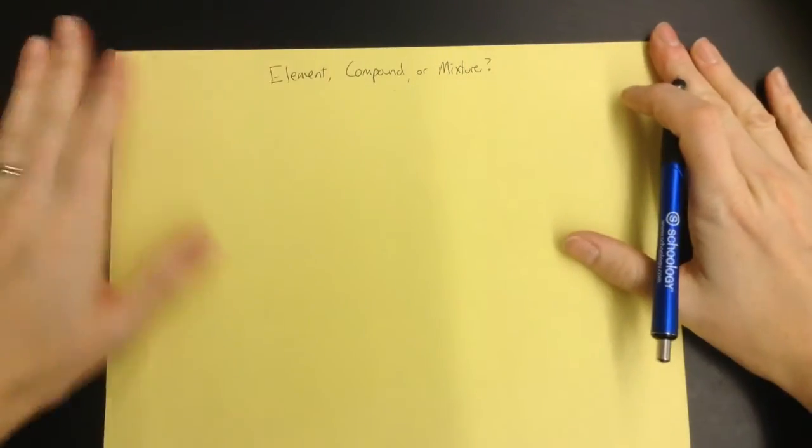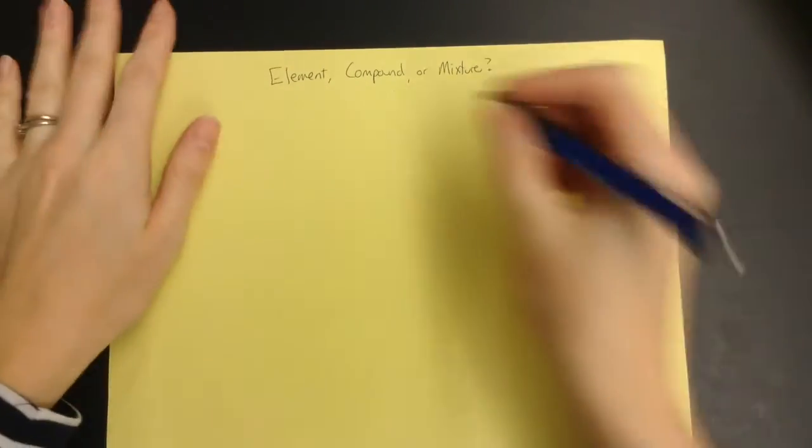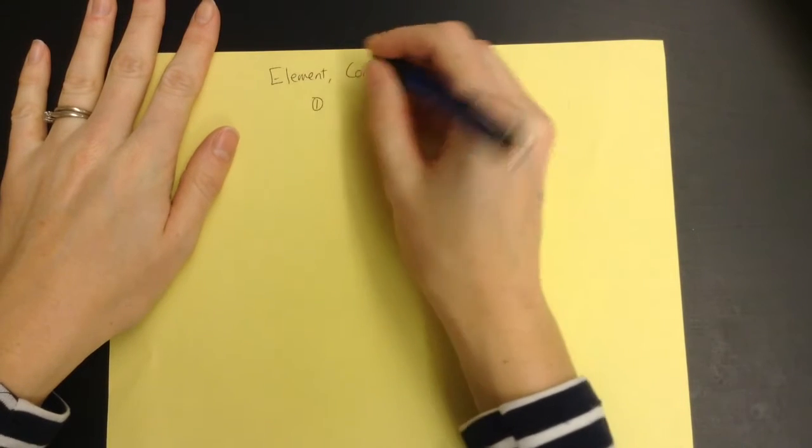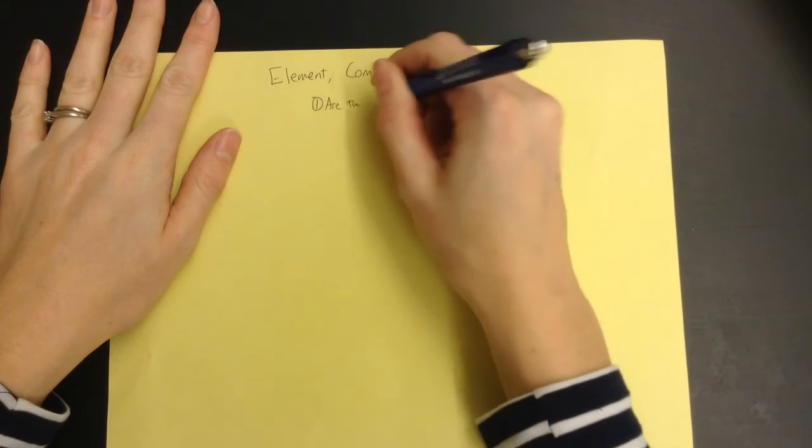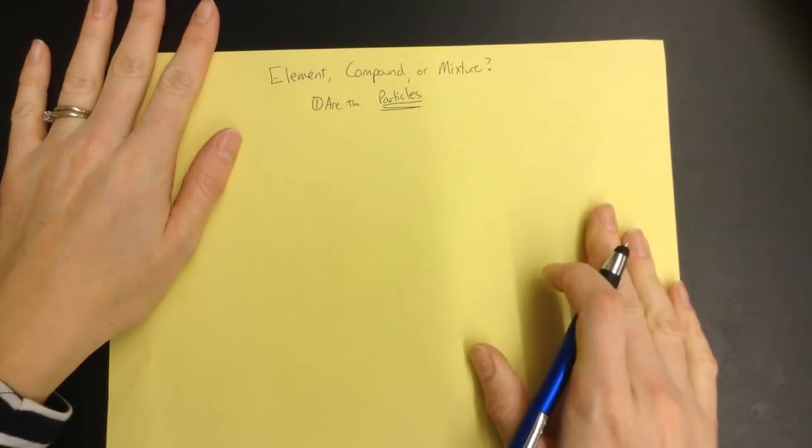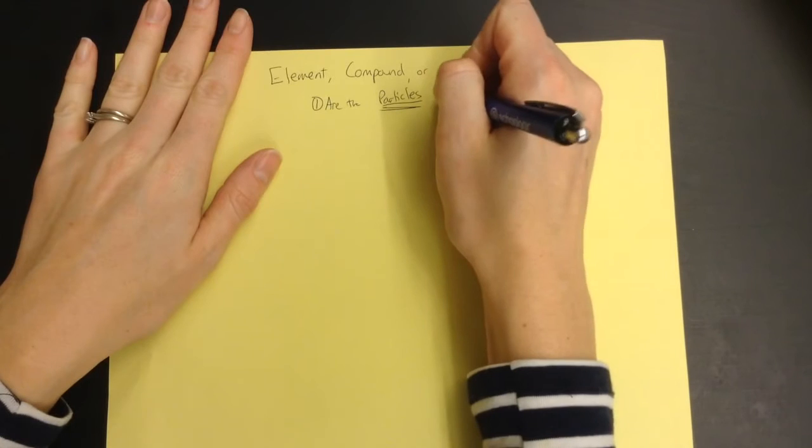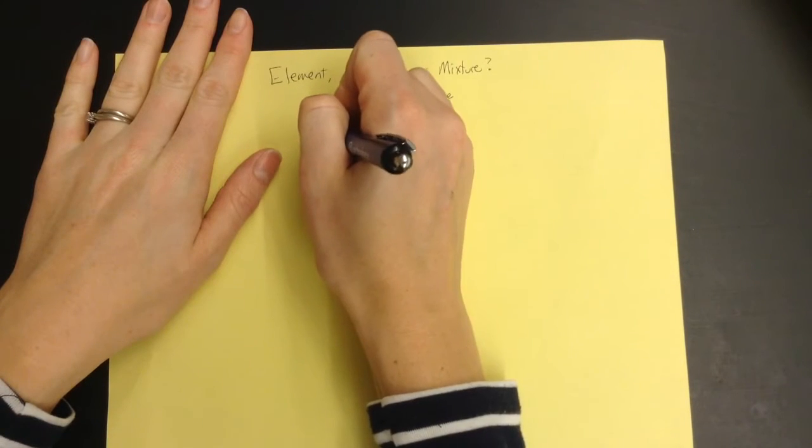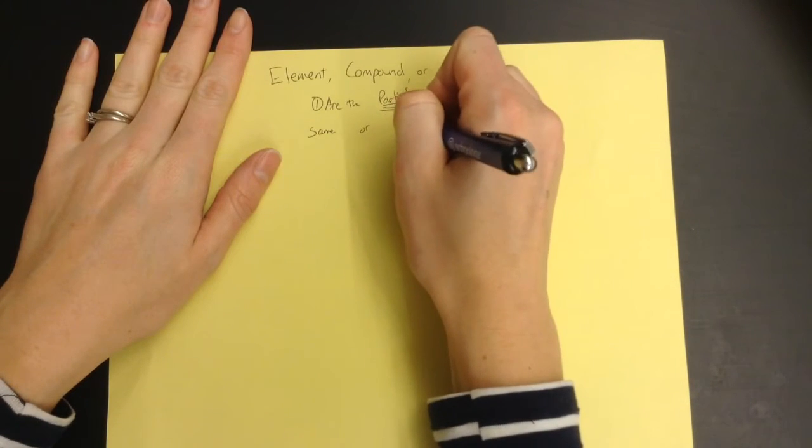Alright, so what I'm going to do is I'm going to make a flow chart of questions that you're going to ask yourself, and the first question is, are the particles—I'm going to underline particles because that's the important part here—are the particles the same or different?